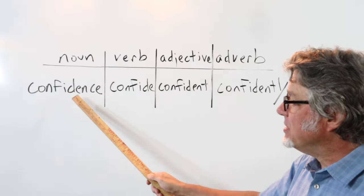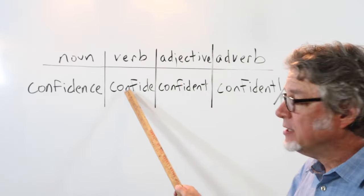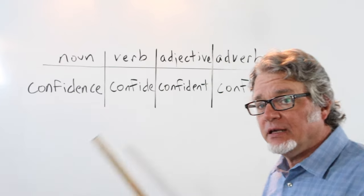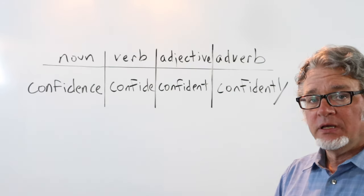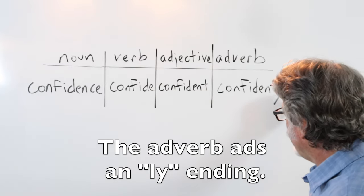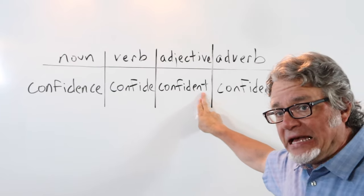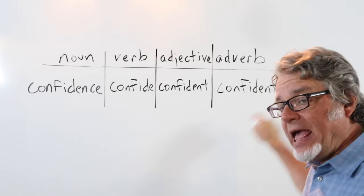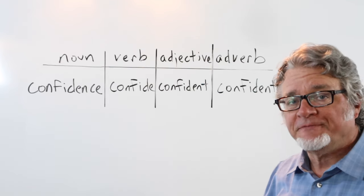Confidence is a noun. Confide is a verb. Confident is an adjective, and confidently is an adverb. Notice that the adverb adds an -ly ending. Here's the adjective — to make the adverb you just need to add an -ly ending: confidently.